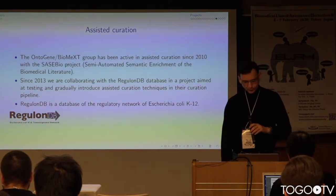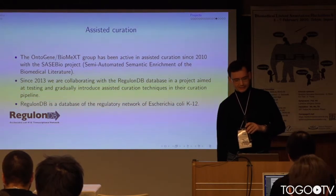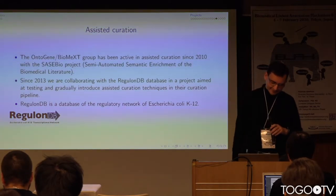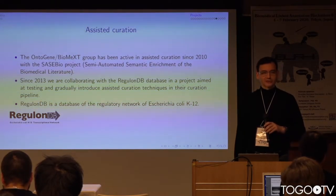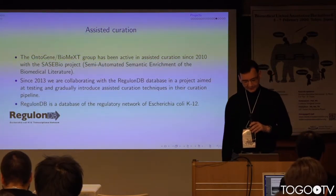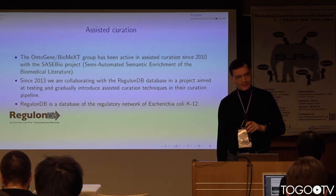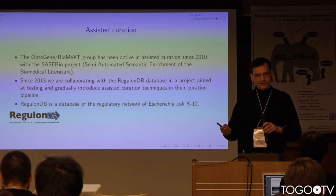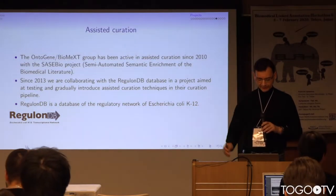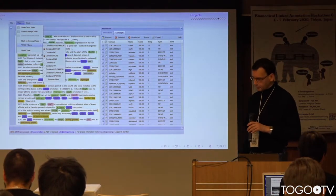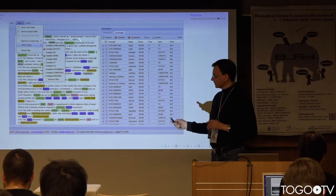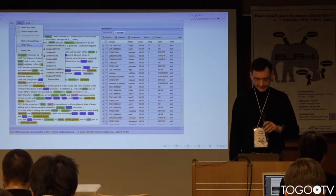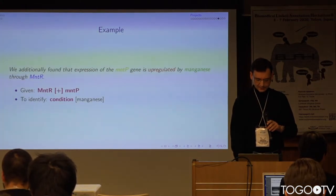Another project I'm a partner in was led by a group in Mexico — the RegulonDB in Cuernavaca, Mexico — which is one of the major life sciences databases. It provides information about E. coli, and the goal is to help curators find information in papers that they need to curate the literature. We provided a tool called Audient, which allows them to visualize entities in a paper that are potentially relevant for their curation tasks, and then extract them.